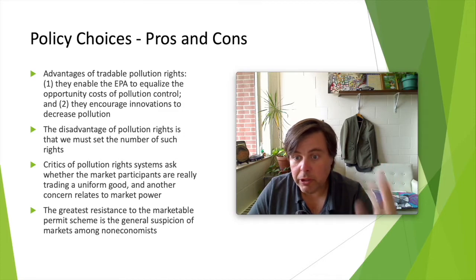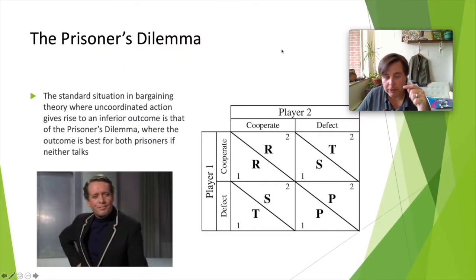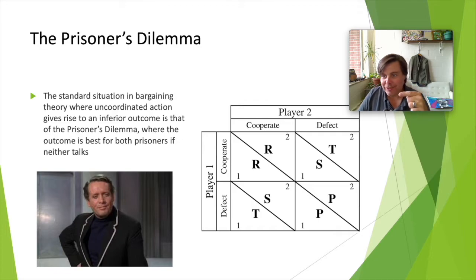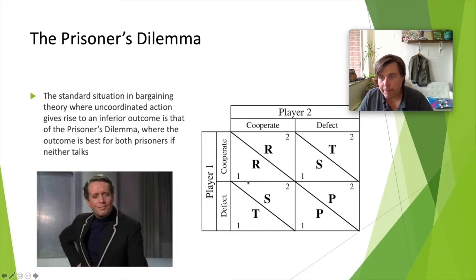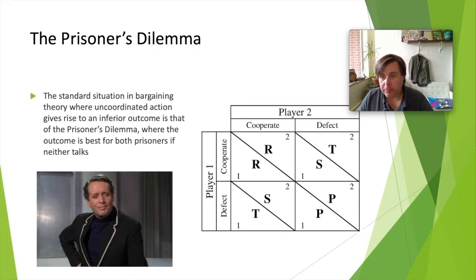Now, this is what we call a payoff matrix, and it's a way to illustrate problems in so-called game theory. This is also not a game theory course, so I won't go too deep into it. But what we're going to illustrate with this is the so-called tragedy of the commons problem — a well-established idea in the mitigation of environmental damage.